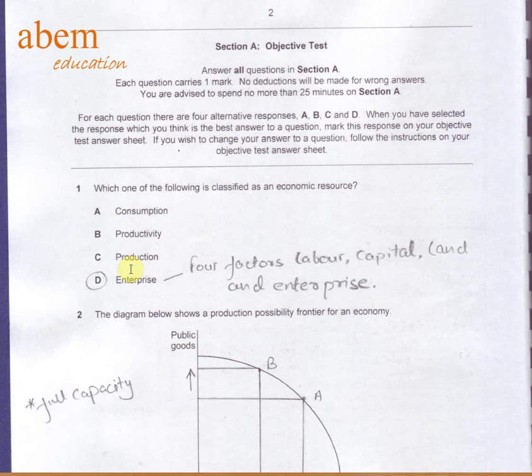Question number one is a pretty straightforward question. We know that four factors of production are labor, capital, land, and enterprise. Therefore, the answer is enterprise.